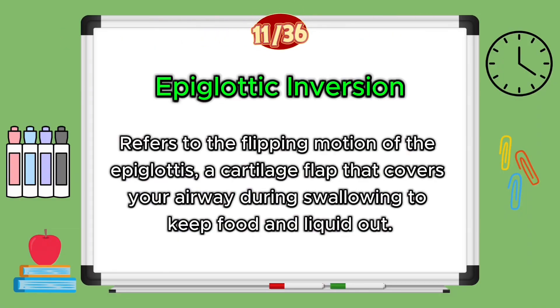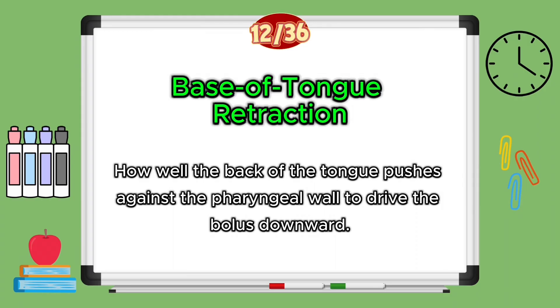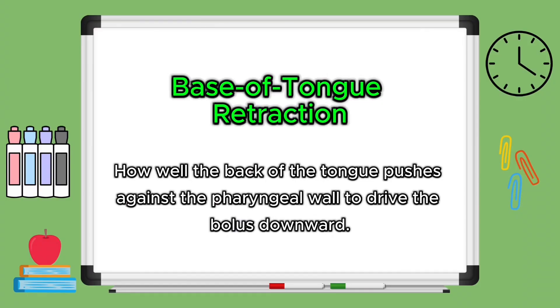Epiglottic inversion refers to the flipping motion of the epiglottis — a cartilage flap that covers your airway during a swallow to keep food and liquid out. Reduced inversion can increase your aspiration risk. Base of tongue retraction refers to how well the back of the tongue pushes against the pharyngeal wall — the back of your throat — to drive the bolus downward. Reduced retraction may cause residue in your throat.